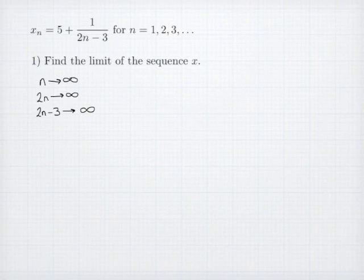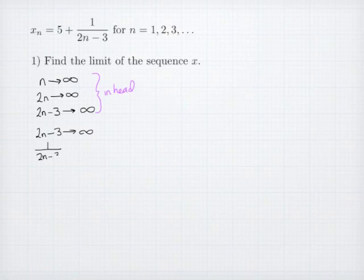These would all be done in your head. Once you notice that 2n-3 is going to infinity, that tells you that its reciprocal, 1 over 2n-3, goes to 0, because the reciprocal of an increasing sequence going to infinity is 0. Once you know that, we're basically done. 5 plus a sequence that goes to 0 goes to 5. And we're done.